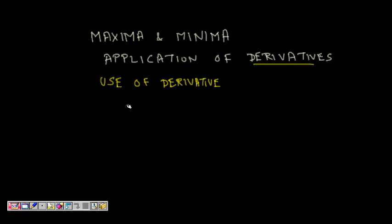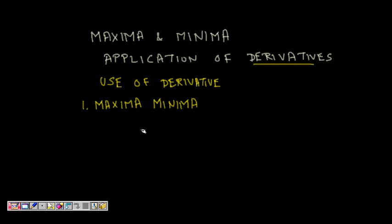Finding maxima and minima is one of the most important uses of derivatives. By common sense, maxima is something related to maximum, and minima is something related to minimum. For a function f(x), what does this mean for a graph?